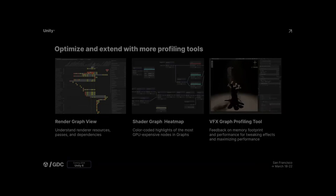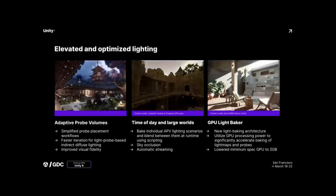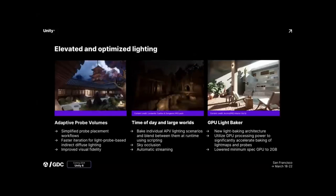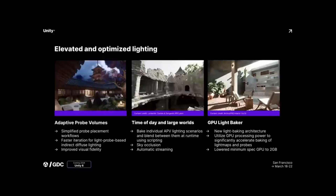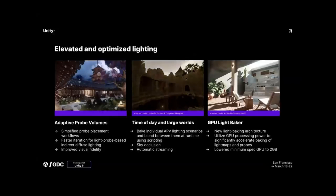There are also some changes when it comes to lighting. We have Adaptive Probe Volumes, which basically automate light probe placement in your world — should make creating nice lighting solutions easier. There's also time of day and large world changes, so you can now bake different lights by time of day and then take those baked results and blend between them. So if you want a dusk between morning and afternoon, you can do that with baked lighting and blend between the two sets.